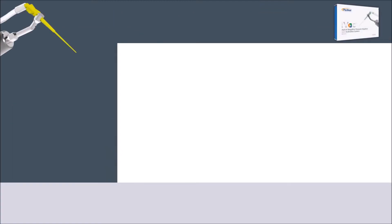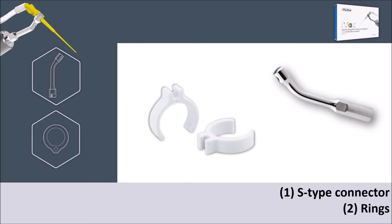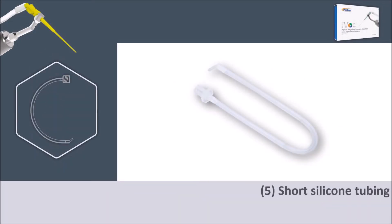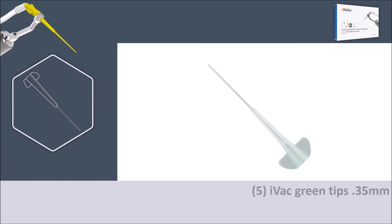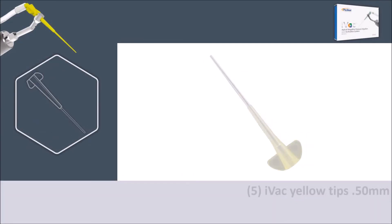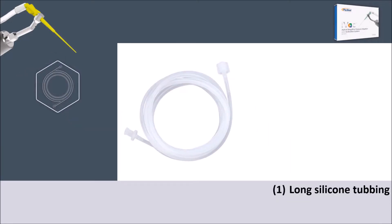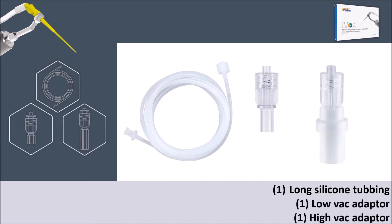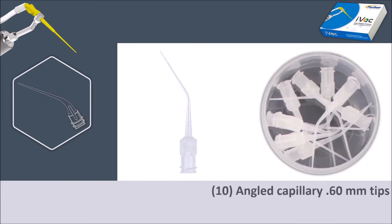The intro kit contains an S-type piezo ultrasonic connector and two silicone rings, five short silicone tubing with five iVac green tips 0.35 millimeters, five iVac yellow tips 0.50 millimeters, long silicone tubing with two female connectors, one low-vac adapter and one high-vac adapter, and ten angled capillary tips.